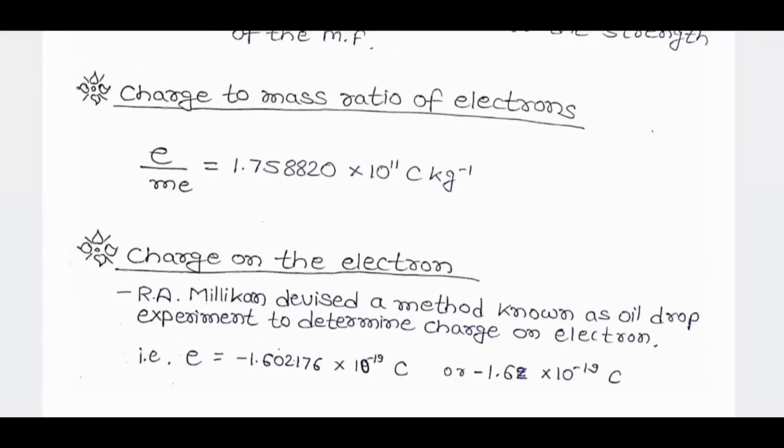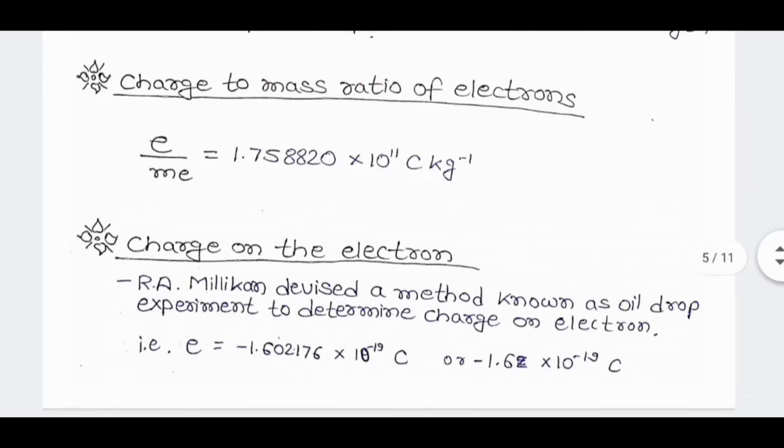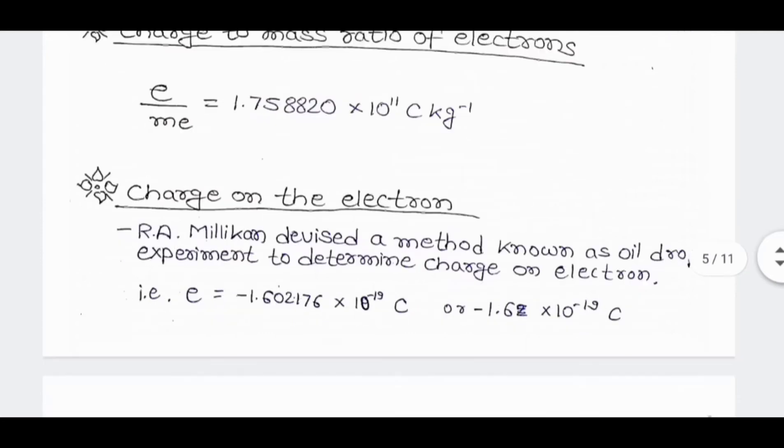Charge to mass ratio of electron: Here, E represents charge of electron and ME represents mass of electron. Therefore, charge to mass ratio is equal to 1.758820 into 10 to the power 11 coulomb kg inverse.